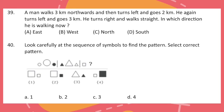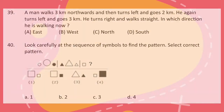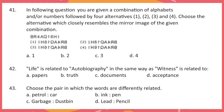Question 40: Look carefully at the sequence of symbols to find the pattern. Select the correct pattern. Question 41: In the following question, you are given a combination of alphabets and/or numbers followed by 4 alternatives: 1, 2, 3 and 4. Choose the alternative which closely resembles the mirror image of the given combination.